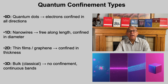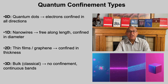Quantum confinement can be classified by dimensionality. In zero-D systems, like quantum dots, electrons are trapped in all directions, leading to sharp, discrete energy levels. In one-D systems, such as nanowires, electrons move freely along the length but are confined in the cross-section. In 2-D materials, like thin films and graphene, electrons are restricted in thickness but free in plane, creating unique band structures. Finally, in 3-D bulk materials, electrons are not confined, so the energy bands are continuous. As we reduce dimensionality, confinement increases and quantum effects dominate.